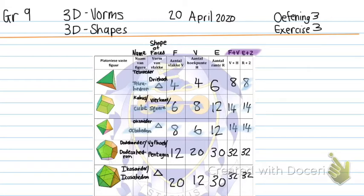Then I have that shape that almost looks like a soccer ball — it's called a dodecahedron. The dodecahedron has 12 faces and all the faces are pentagonal — they are pentagons. The vertices are 20, the edges are 30, and I get 32 and 32 when I add those.